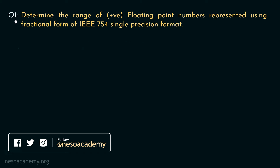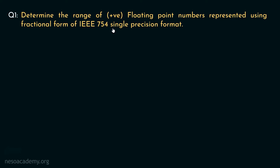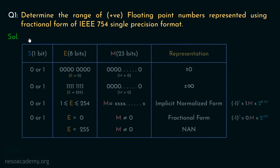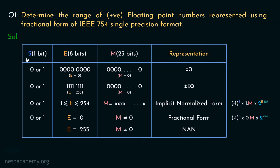Consider the first question: determine the range of positive floating point numbers represented using the fractional form of IEEE 754 single precision format. IEEE 754 single precision format has the bit organization where the MSB is the sign bit (1 bit), the next 8 bits are dedicated for the exponent, and the last 23 bits are dedicated for the mantissa part.